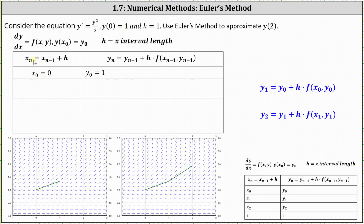Next, we determine x sub one. Notice if n is equal to one, x sub one is equal to x sub zero plus h, or in our case, x sub one is equal to zero plus one, or one. Now we determine y sub one. When n is equal to one, y sub one equals y sub zero plus h times f of x sub zero comma y sub zero, which gives us y sub one equal to one plus h times f of zero comma one. We determine f of zero comma one by substituting one into f of x comma y, which is y squared divided by three, giving us one plus one times one third, or four thirds for y sub one.